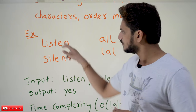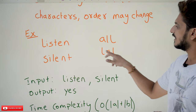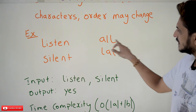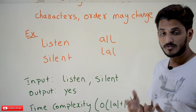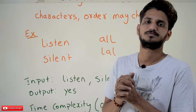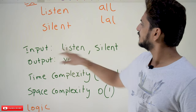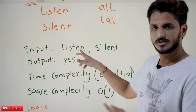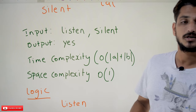The order may change, but these two we call anagram. Similarly, 'all' and 'all' — we call it anagram. Two L's here, two L's there, one A here, one A there. Same number of characters, same characters, and same frequency must also be maintained. Input: listen, silent. Output should be yes. If they are not anagrams, display no.